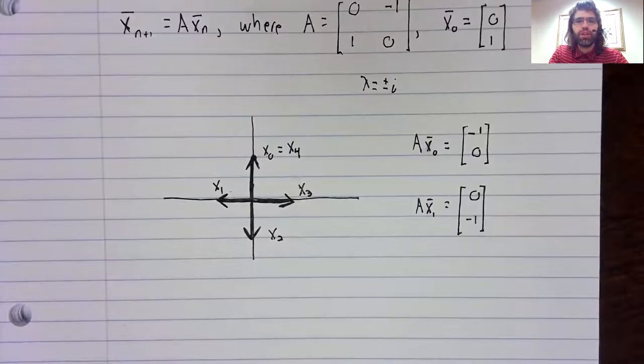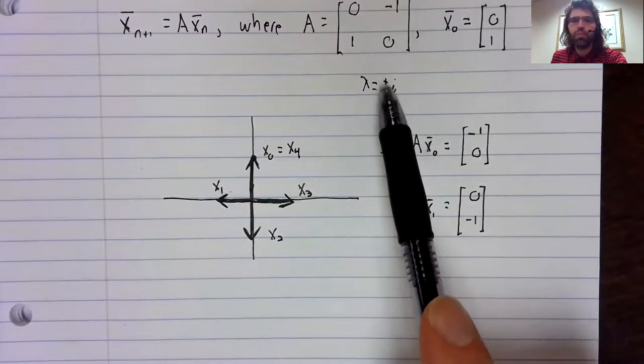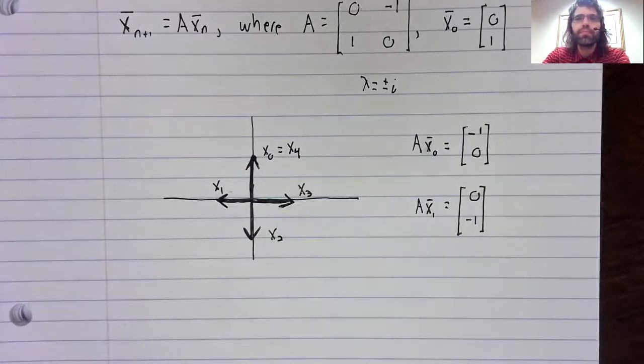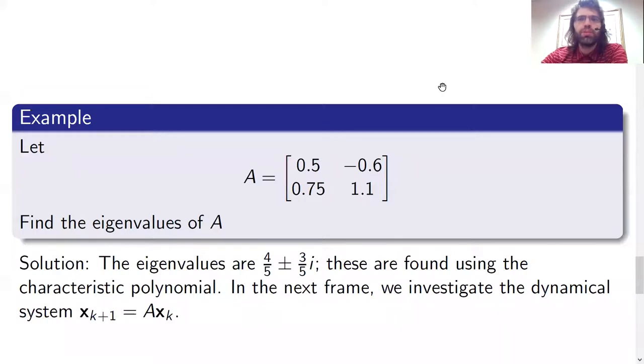If we look at another example, maybe one where the eigenvalues really are complex and not purely imaginary. Now here's the second example from my notes. This has genuinely complex eigenvalues, four-fifths plus or minus three-fifths times the imaginary unit.